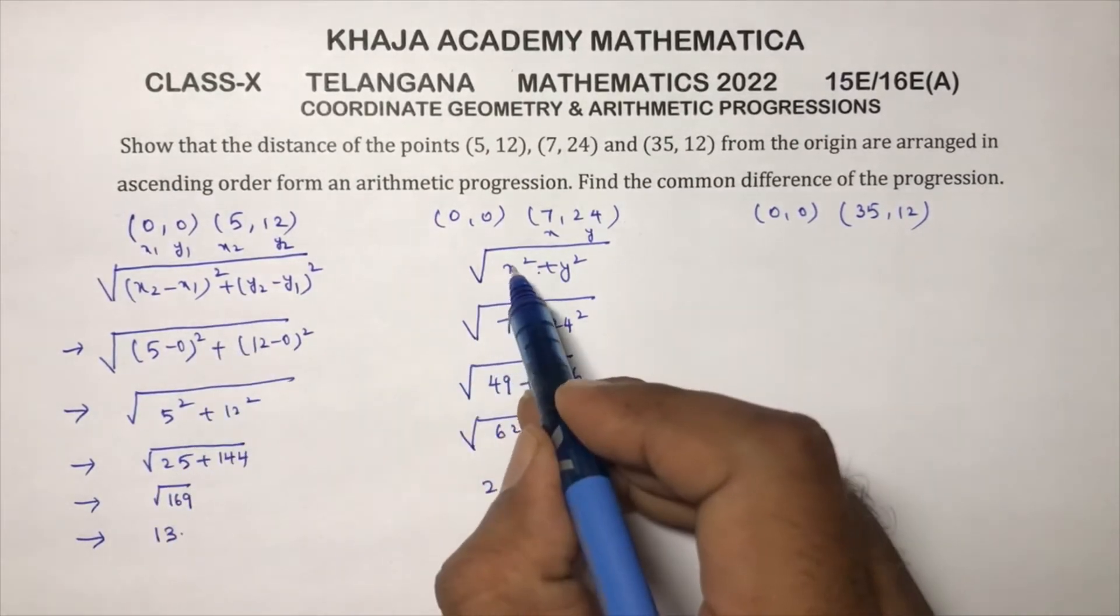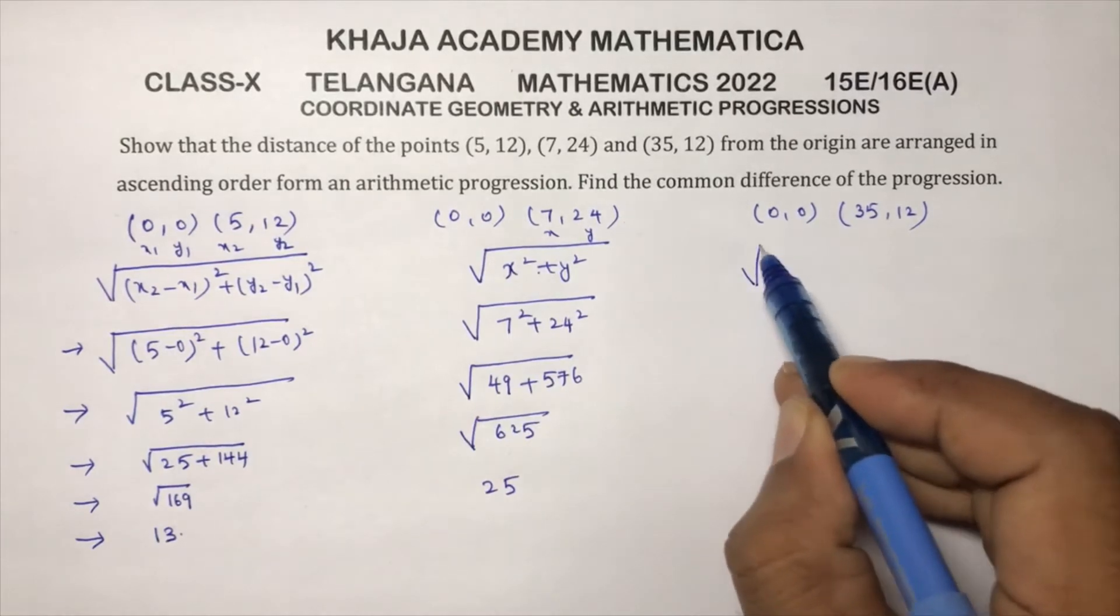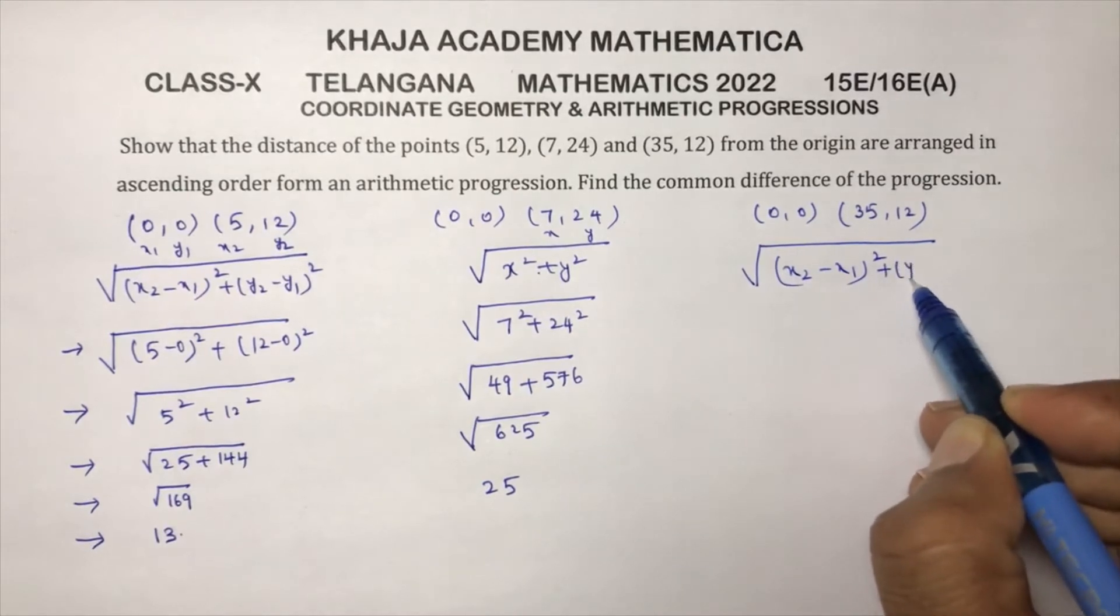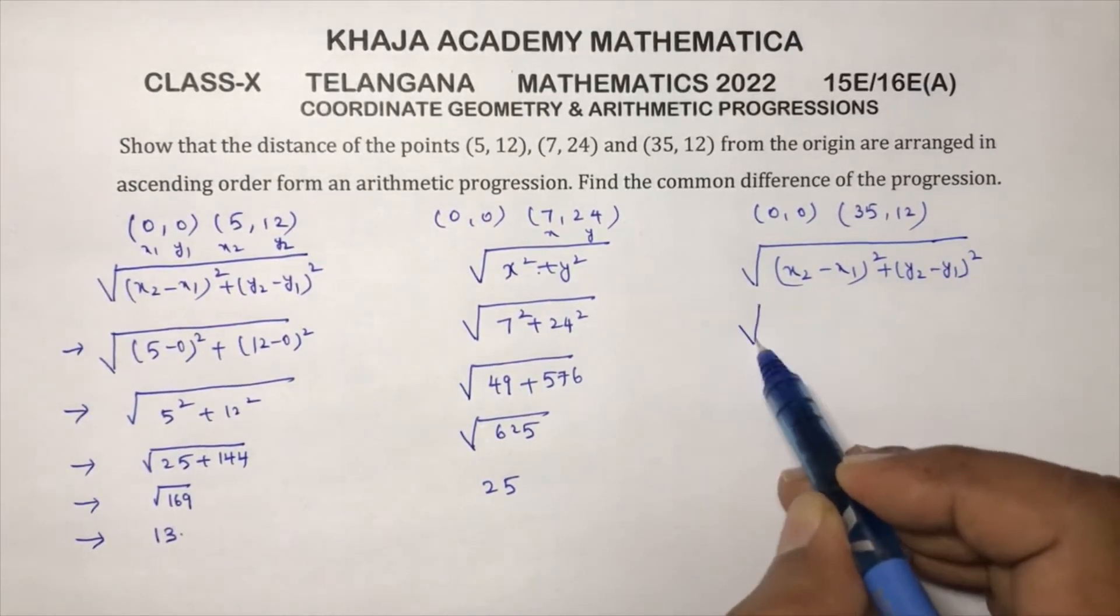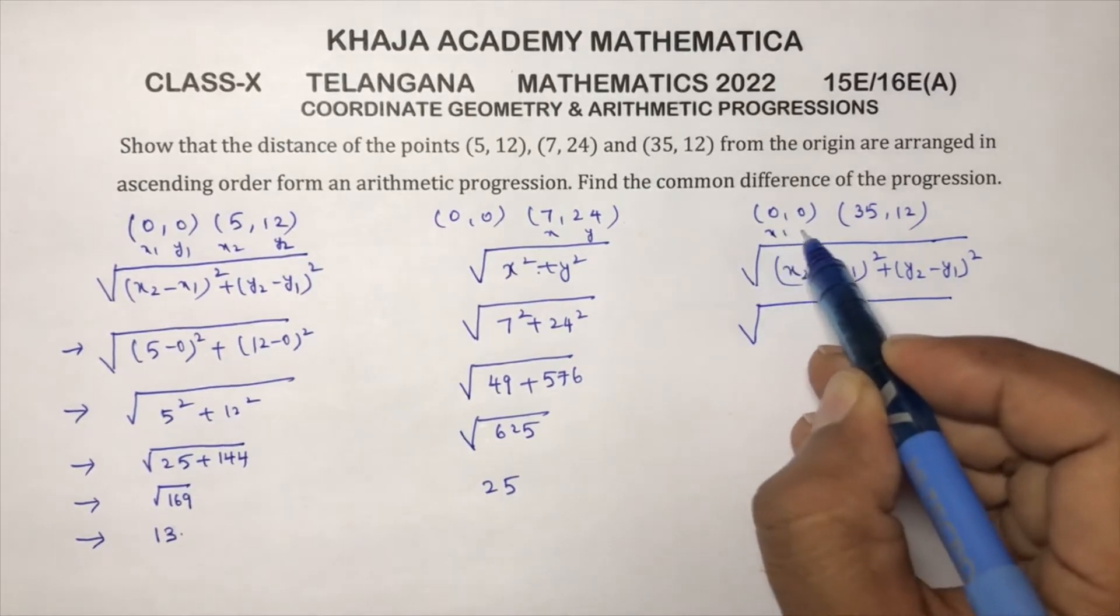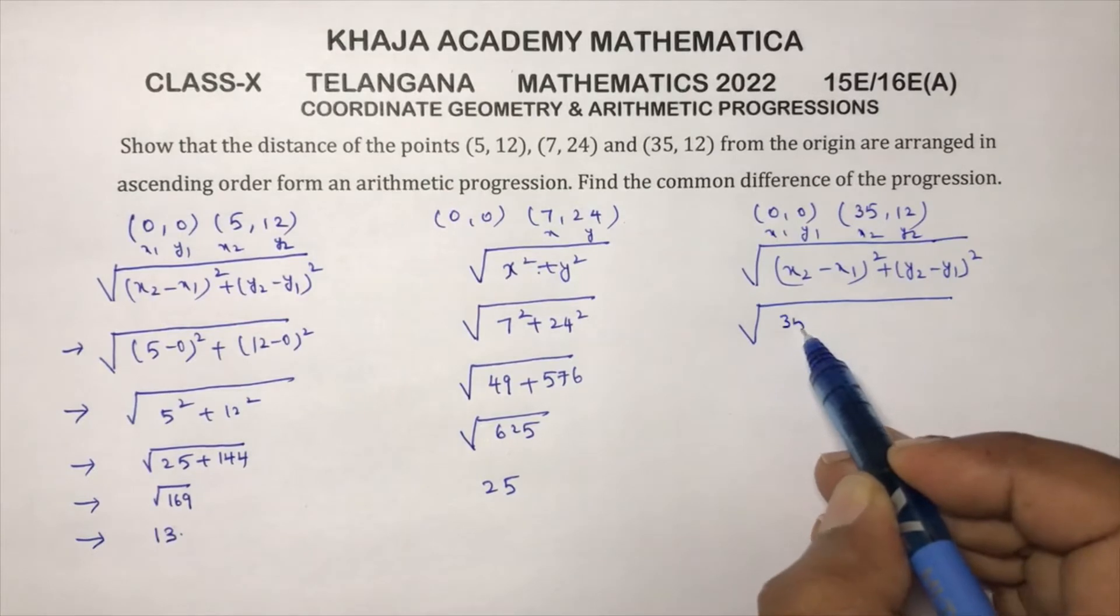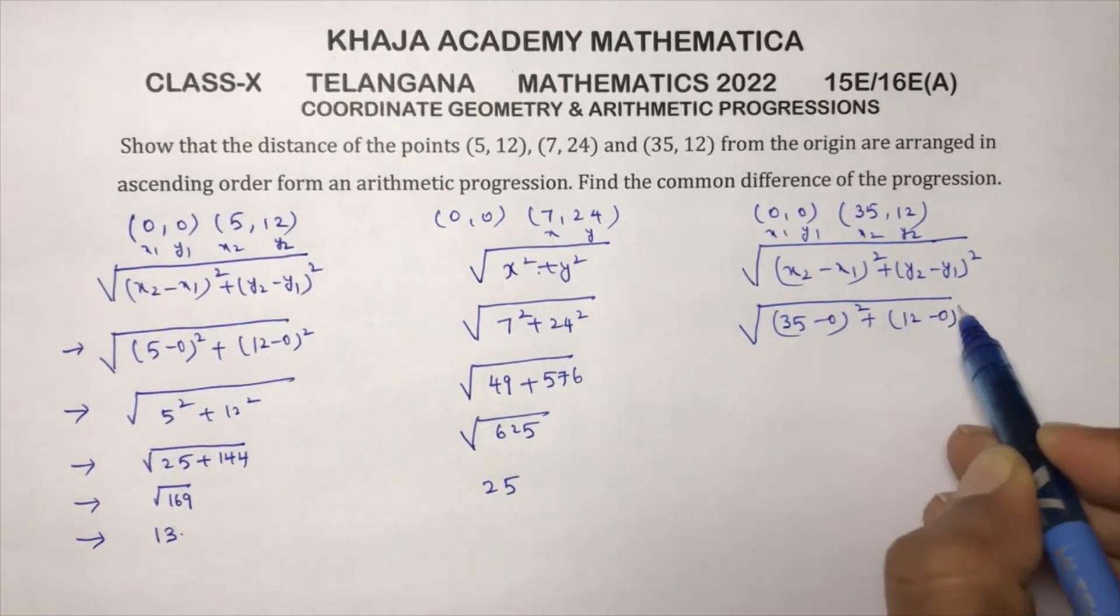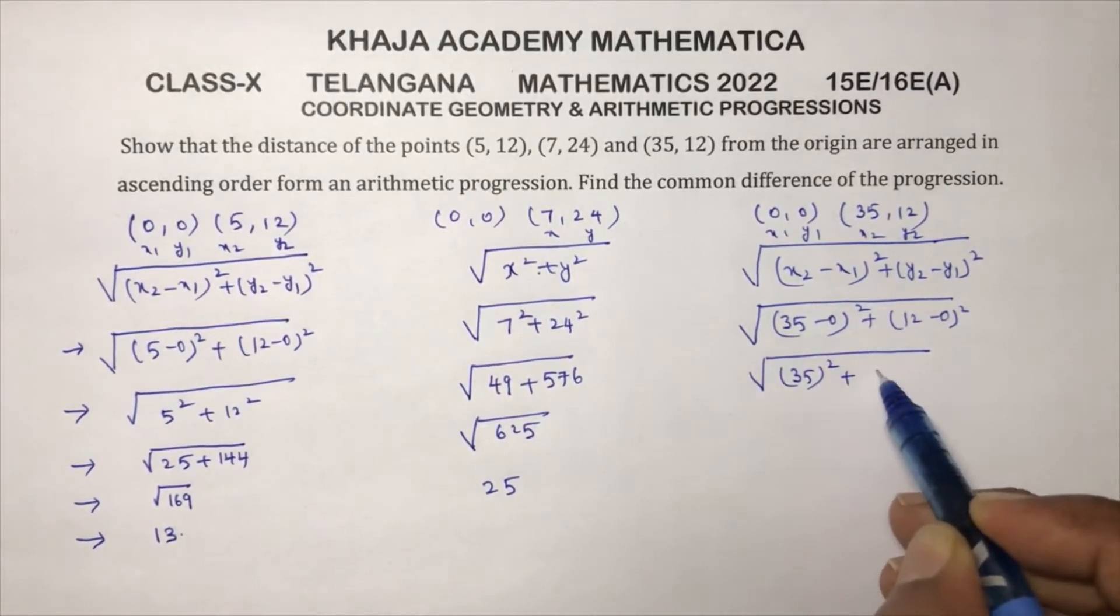So total is 625, so root 625 is 25. Now here see, you can use this formula or the standard formula, because one point is origin. Here x1, y1, x2, y2, so here (35 minus 0) whole square, (12 minus 0) whole square.